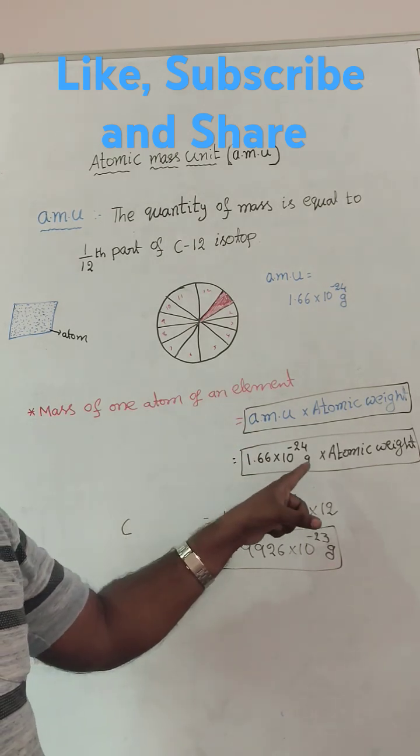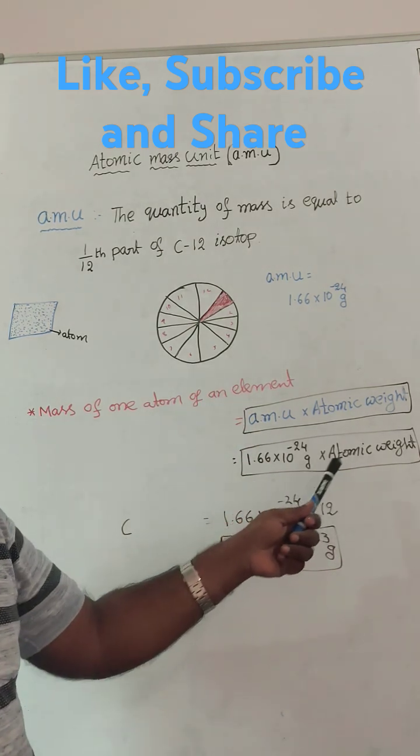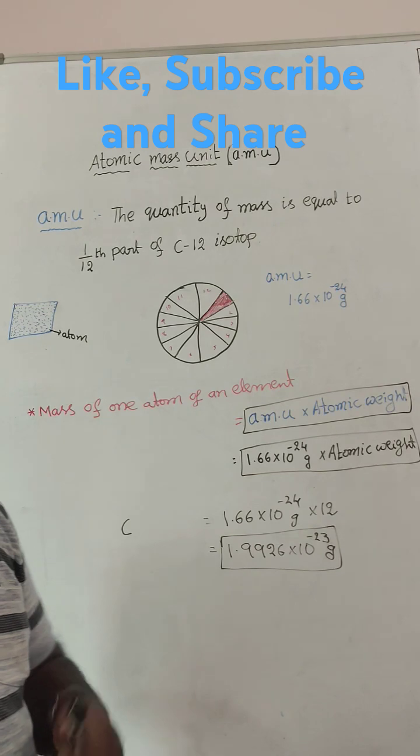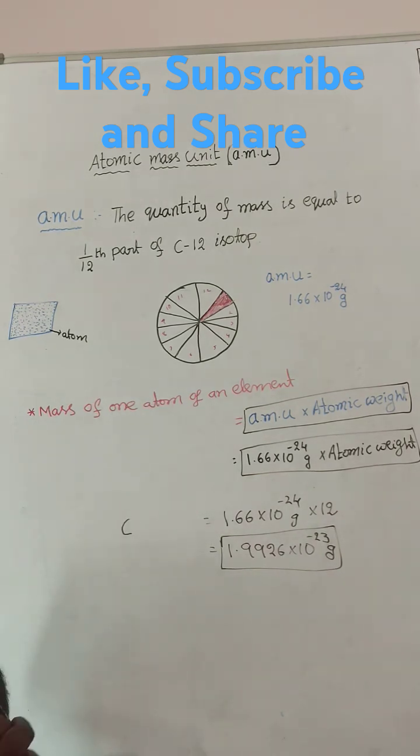AMU value how much? 1.66 into 10 to the power of minus 24, into atomic weight. For example, I want to calculate for carbon.